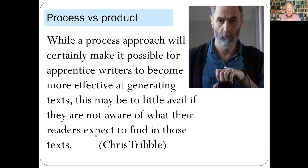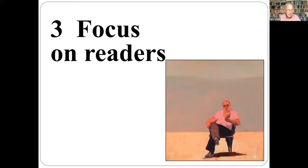As Chris Tribble says: while the process approach will certainly make it possible for apprentice writers to become more effective at generating text, this may be to little avail if they're not aware of what their readers expect to find in those texts. Mentioning readers brings us to the third approach. While writer-oriented research sees context as the site of writing — where the writer is and what they're thinking about — this final approach expands the idea of context beyond the local writing situation to the reader's context.